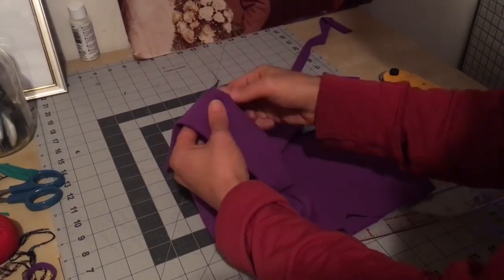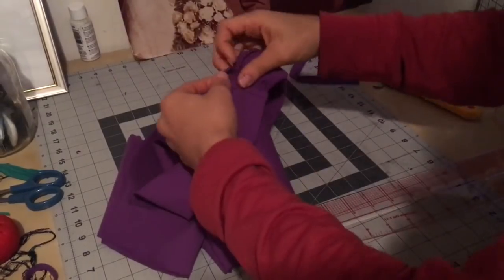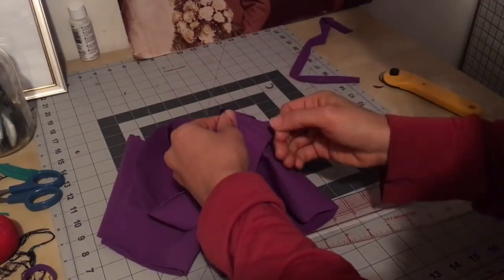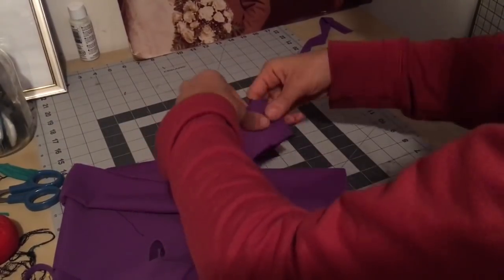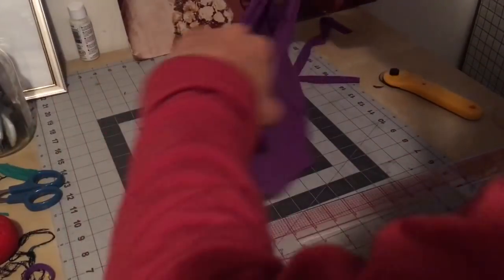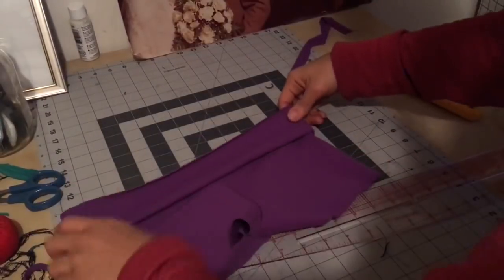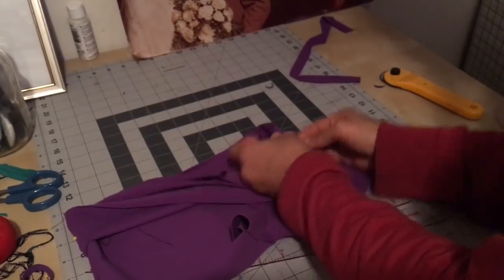All you do is fold it over, then match the side seams to the side seams of the shorts and do the same thing to the other side. All you got to do is pin it all the way around and take it to your sewing machine and sew it.